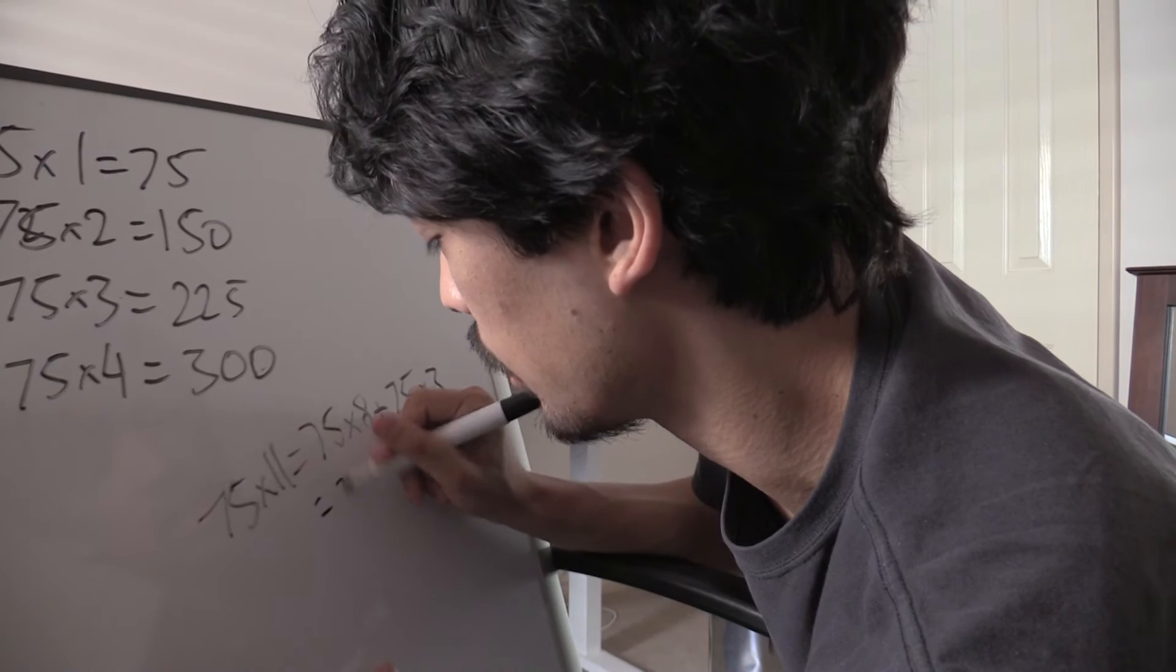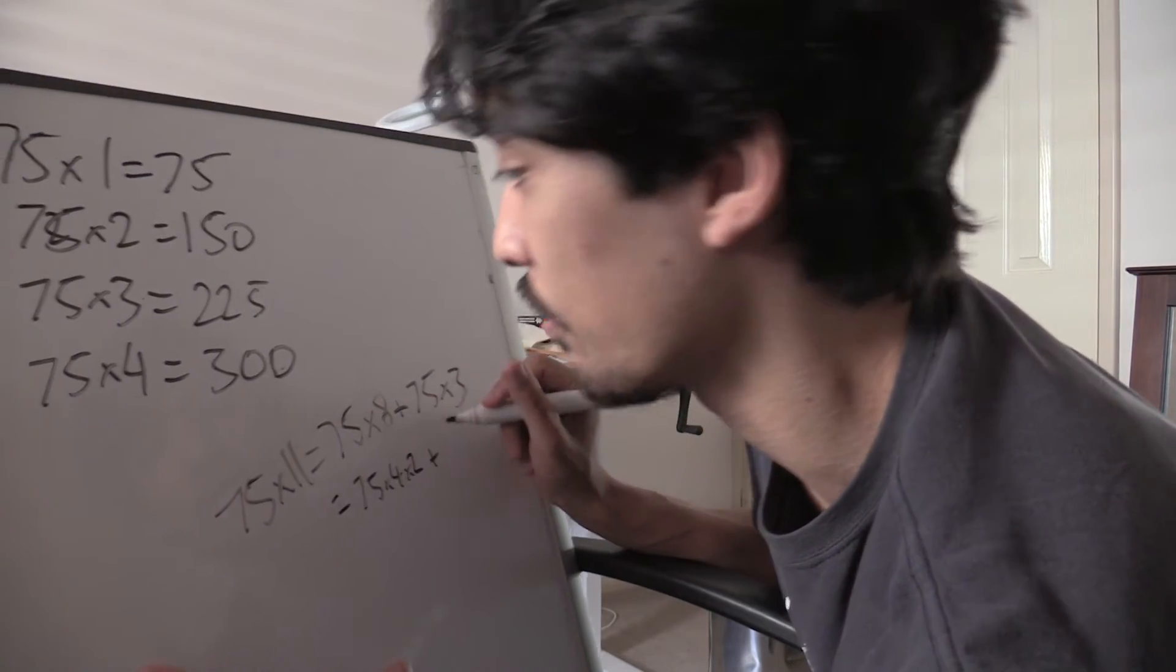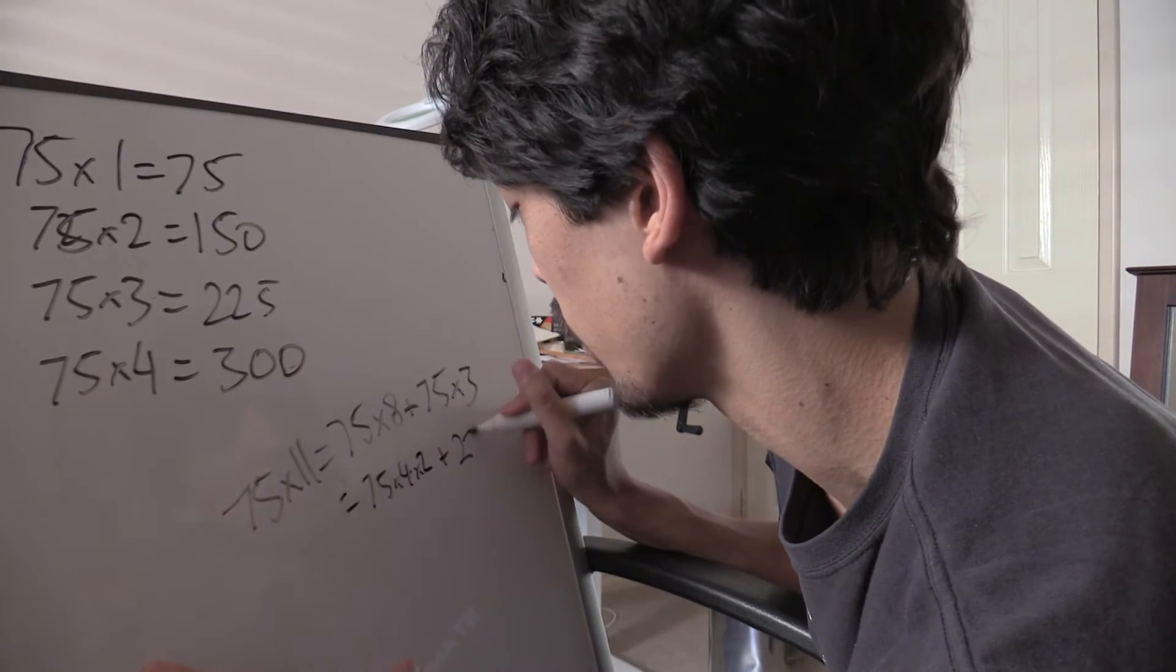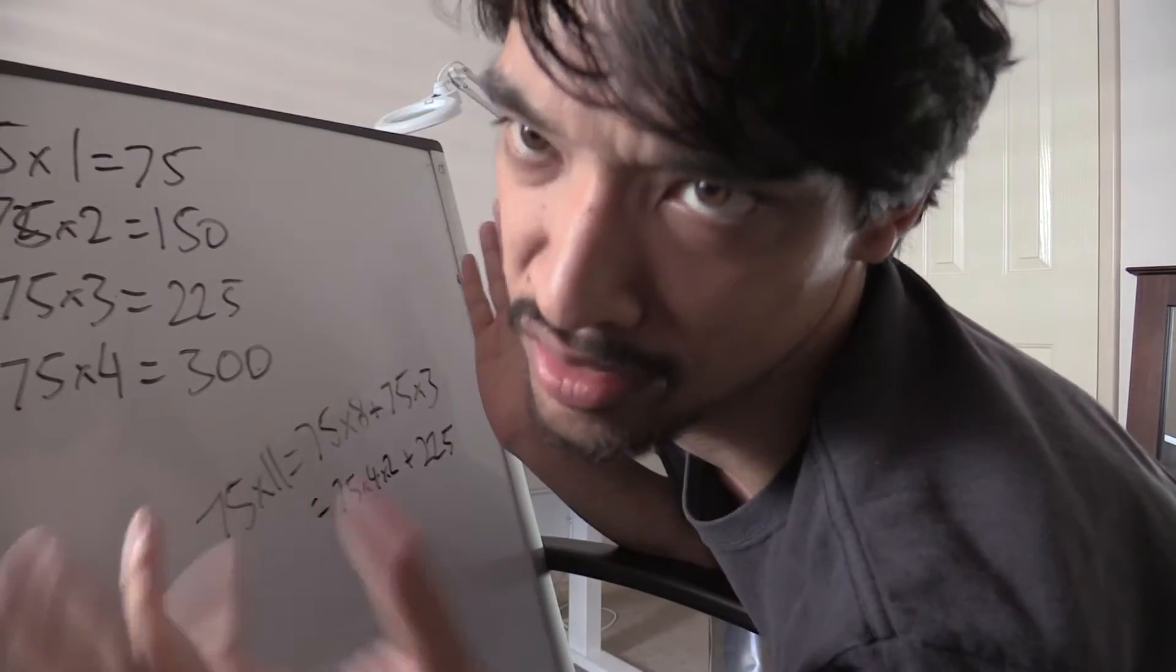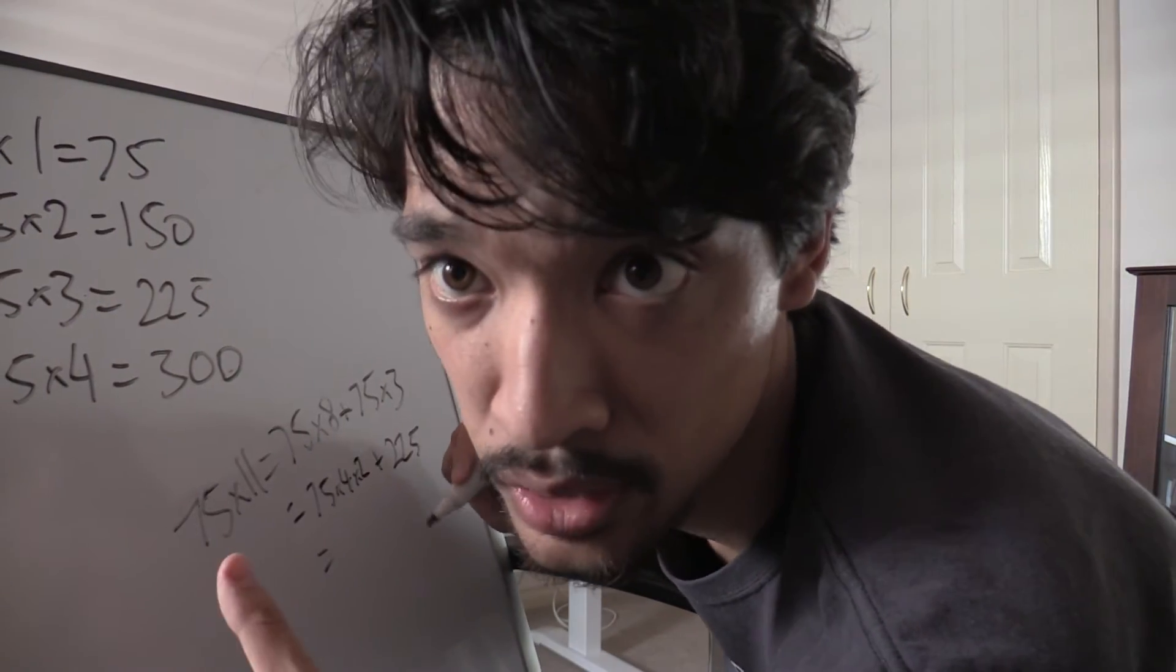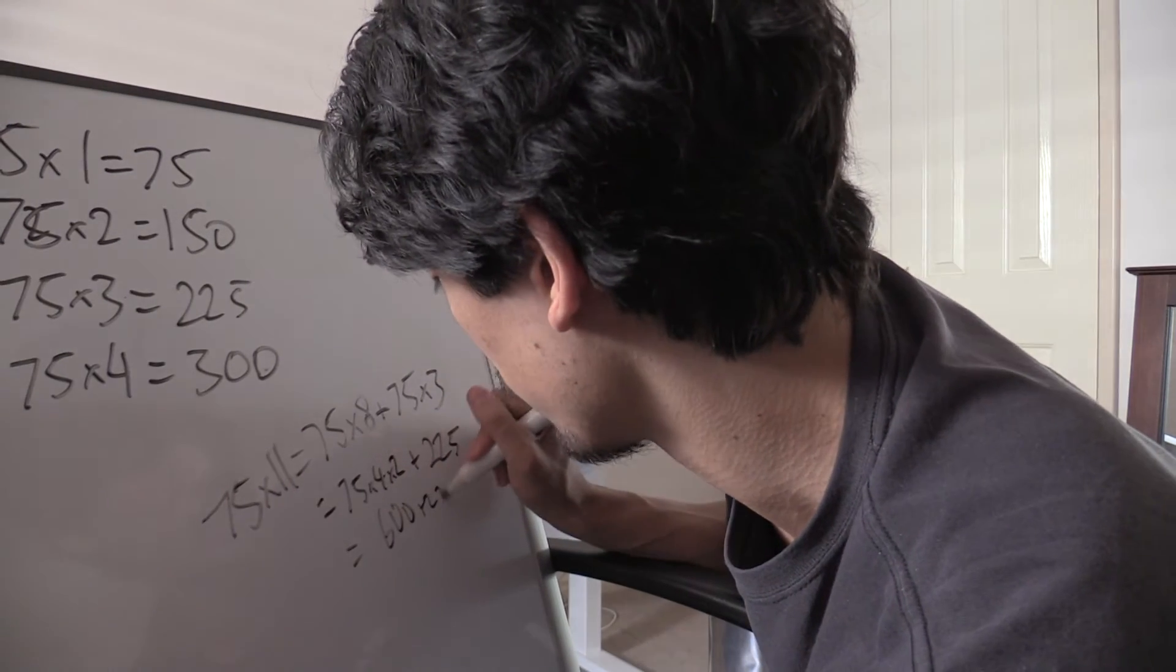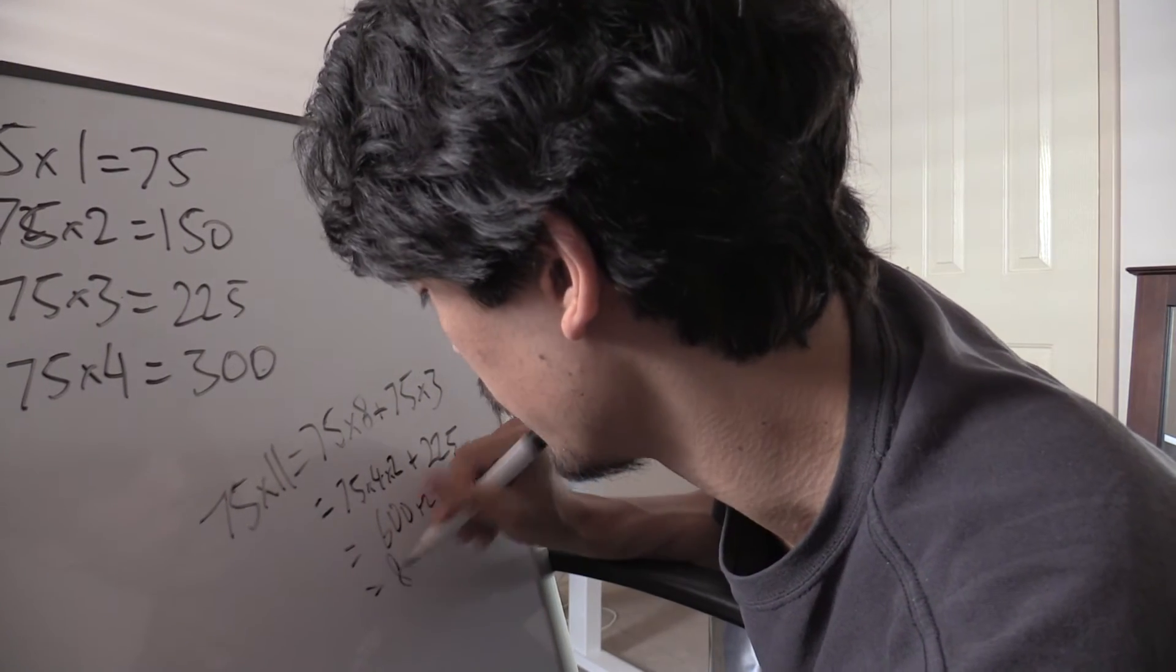Which of course, 75 times 8 is 75 times 4 times 2, add 75 times 3, you know that to be 225. So 75 times 4 is 300 times 2, 600, add 225 equals 825. It's just maths, it's maths.